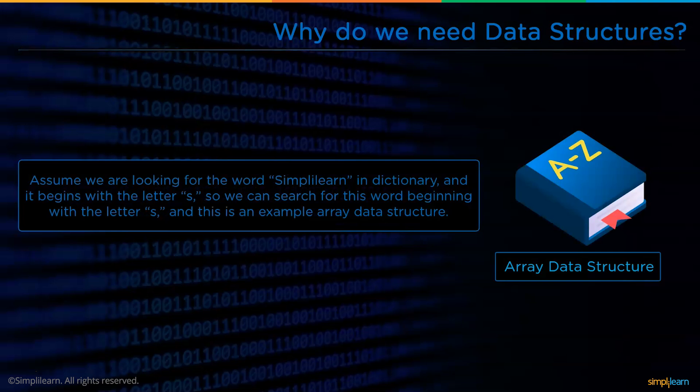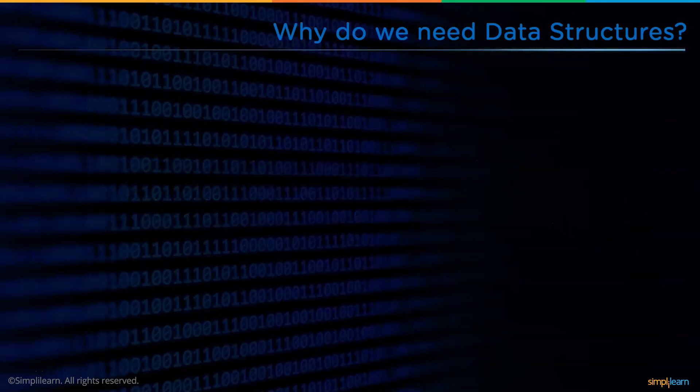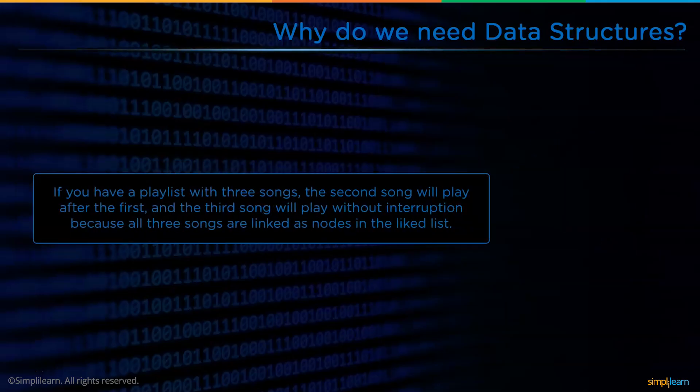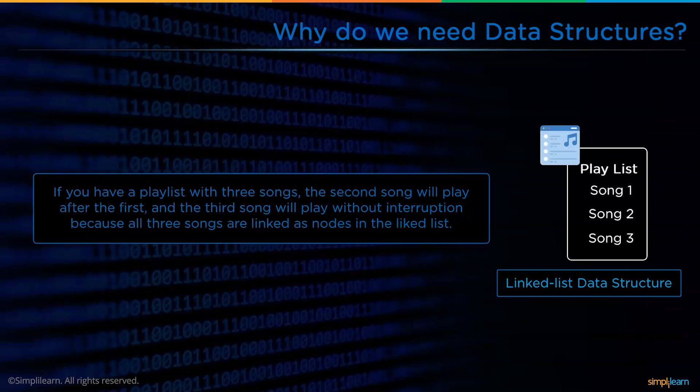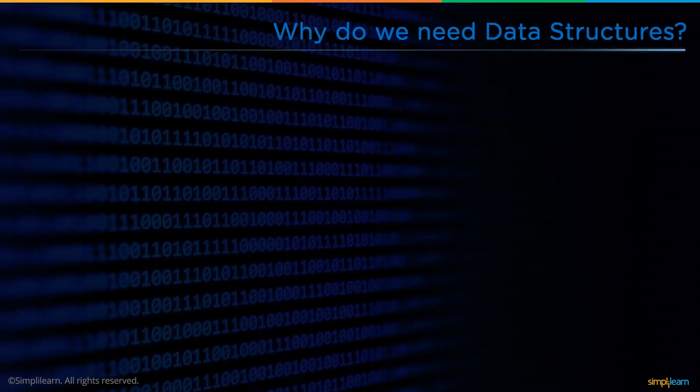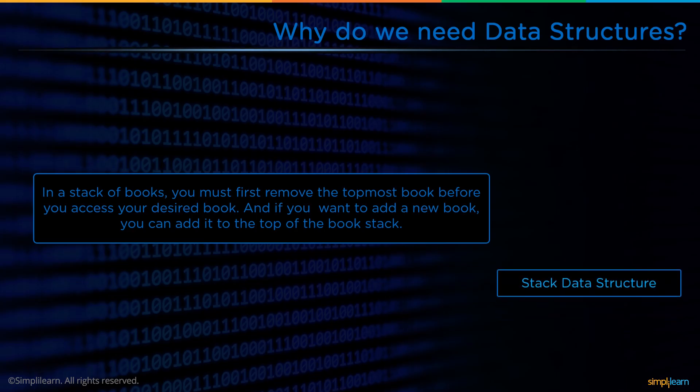Following that, we have a music player example. If you have a playlist with three songs, the second song will play after the first, and the third will play after the second. These will be played without any interruption because all three songs are linked with each other using a linked list type of data structure.